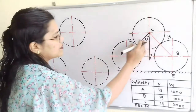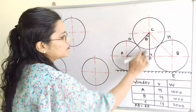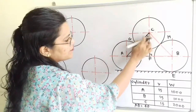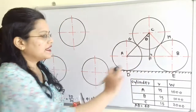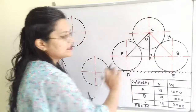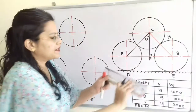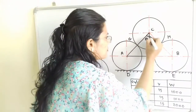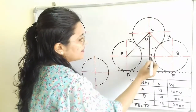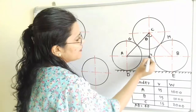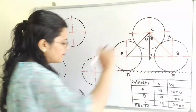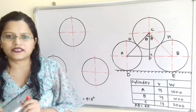By symmetry, AC equals BC and AF equals FB. Therefore, the angle FCB is also equal to 41.8 degrees.